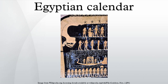A tablet from the reign of First Dynasty King Ja was conjectured by early Egyptologists to indicate that the Egyptians had already established a link between the heliacal rising of Sirius and the beginning of the year. However, more recent analysis of the pictorial scene on this tablet has questioned whether it actually refers to Sothis at all. Current knowledge of this period remains a matter more of speculation than of established fact.